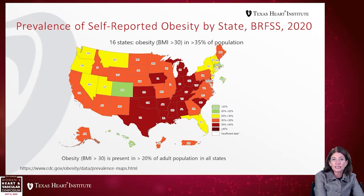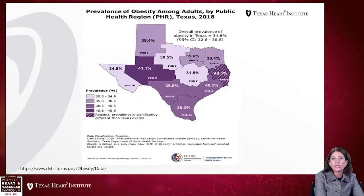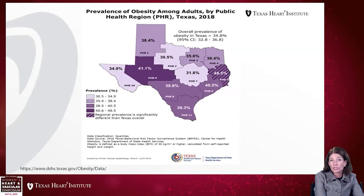States in the west and Florida have lower weights and are in better shape. Looking at the prevalence of obesity among adults in Texas by region, the lowest prevalence is around Austin and the highest is in eastern Texas on the Louisiana line, but certainly all of Texas is considerably obese.